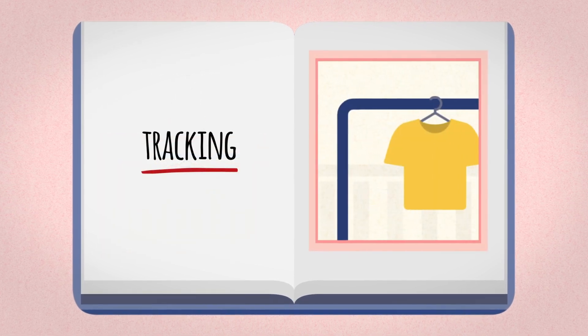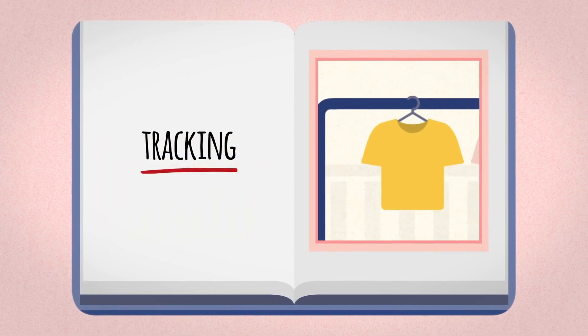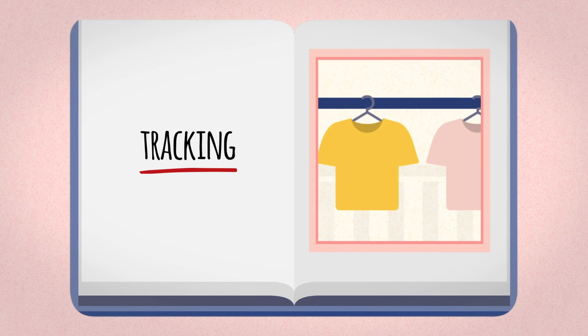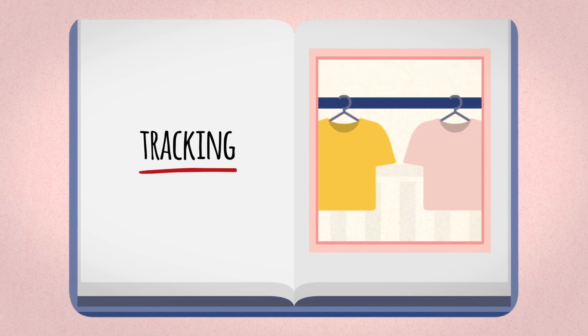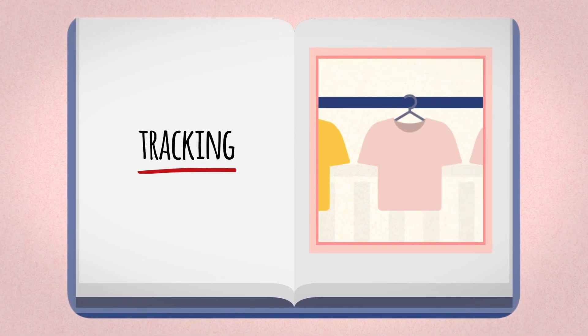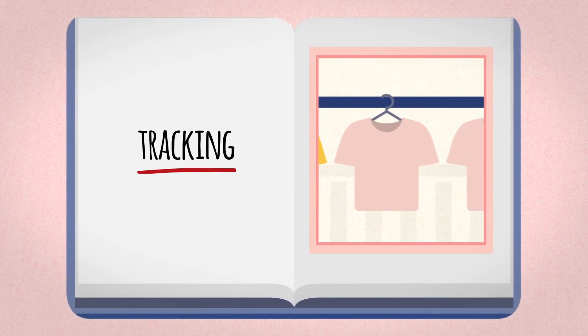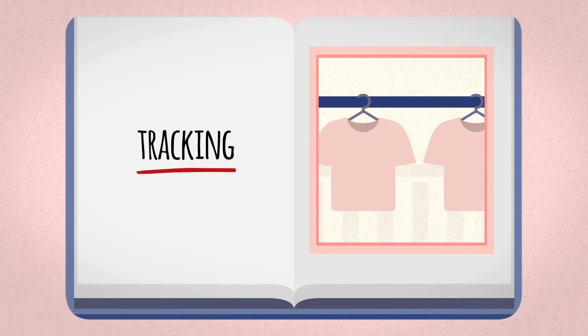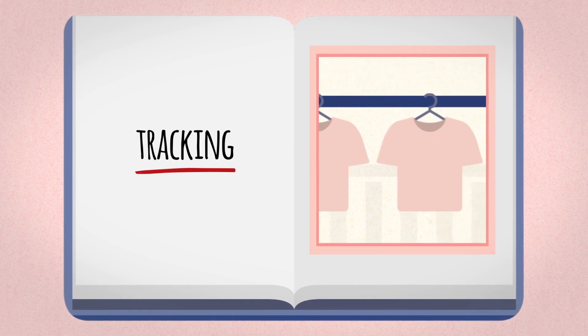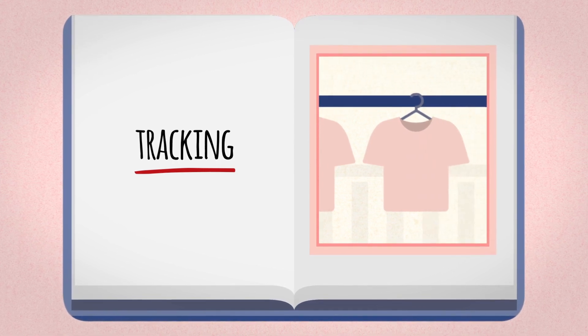Tracking is moving the camera from one side to another side with a constant distance. It is used to follow a subject that would leave the frame, such as a character or vehicle in motion — in this case, the t-shirts.